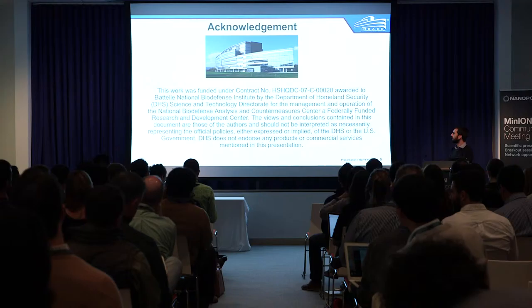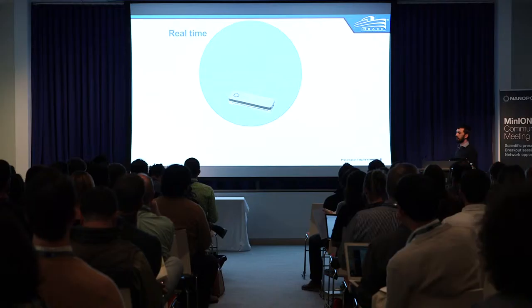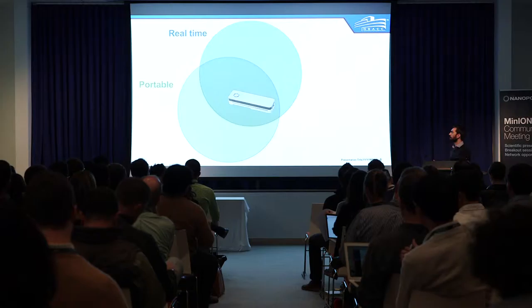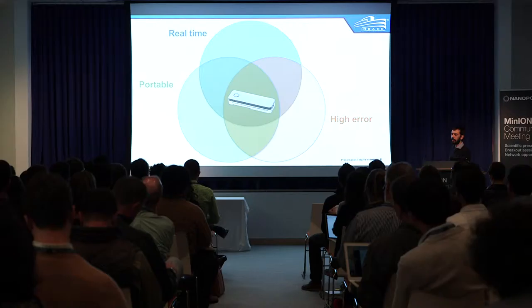We've heard a lot about this device and its unique properties in the last couple of days. Of course it's real time — you can see the reads coming off it as they're sequenced, so that's really useful. It's also very portable, but of course there are always drawbacks. In this case the error rate is still pretty high compared to something like second generation short read sequencing.